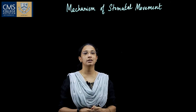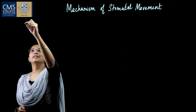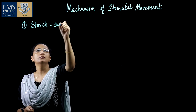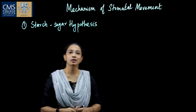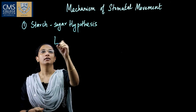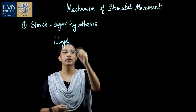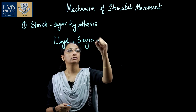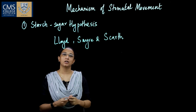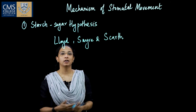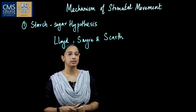There are two theories about the mechanism of stomatal movement. The first is the starch-sugar hypothesis. This theory was proposed by Lloyd and elaborated by Sayre and Skarth. This theory holds that transpiration is controlled by the interconversion of starch and sugar, and also the effect of pH and the enzymes that control these interconversions.